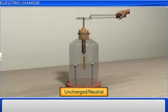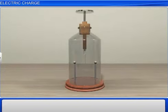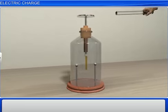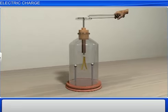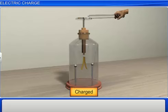If the gold leaves repel each other, then it indicates that the glass rod is charged. The amount of divergence provides a rough measure of the charge on the glass rod.